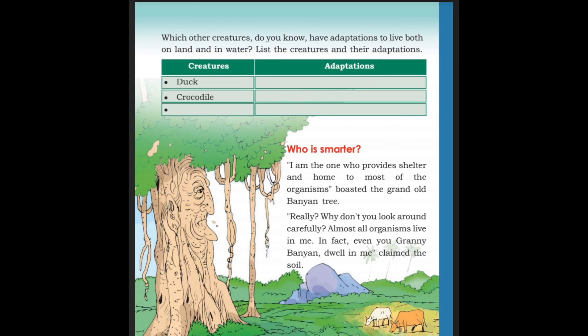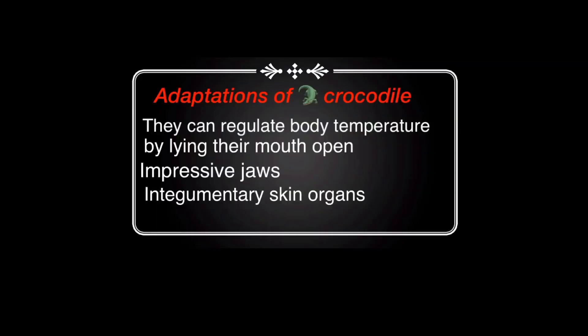Here, duck and crocodile — there are two names of creatures. We will add one creature and its adaptations. Let us take the environment area and list the two creatures. First one: adaptations of crocodile.